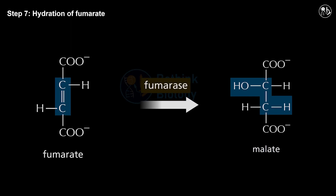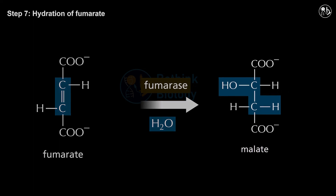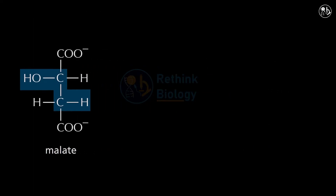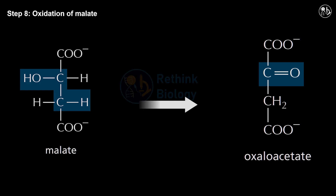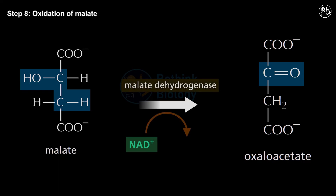Step 7: Hydration of fumarate. In this step, fumarate is hydrated to form malate. This reaction is catalyzed by the enzyme fumarase and involves the addition of a water molecule. Step 8: Oxidation of malate. In this step, malate is oxidized to form oxaloacetate. This reaction is catalyzed by the enzyme malate dehydrogenase and transfers electrons to NAD⁺ to form NADH and H⁺.